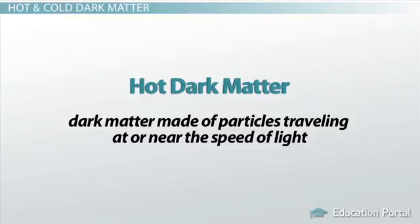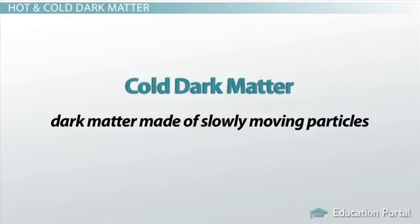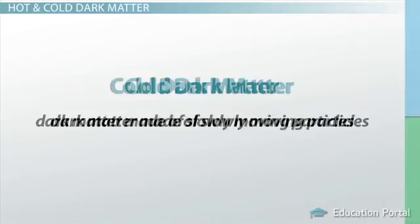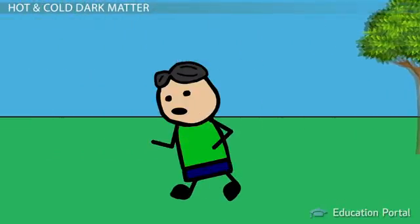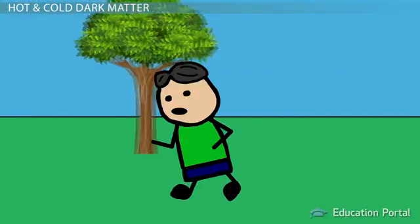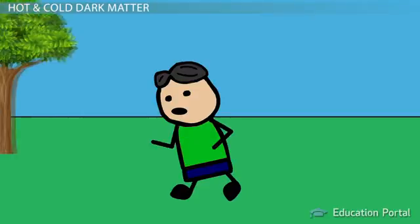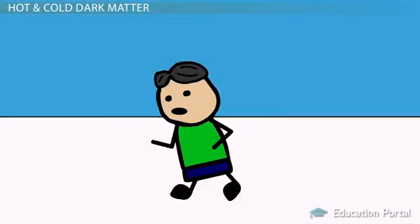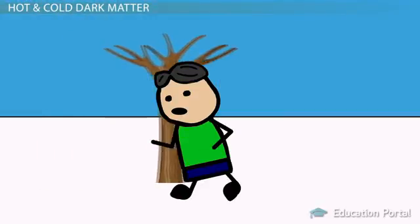Cold dark matter refers to dark matter made of slowly moving particles. This is easy to recall because you yourself can run a lot faster when it's hot outside and your muscles are all warmed up, in comparison to cold weather where you're going to run more slowly since your muscles are tense from the cold.